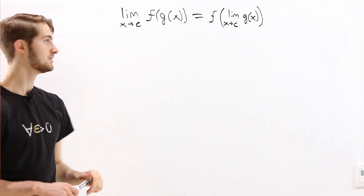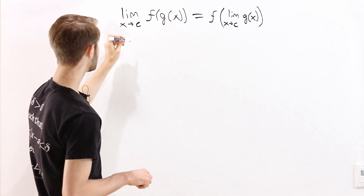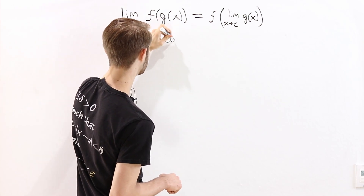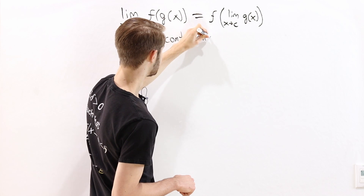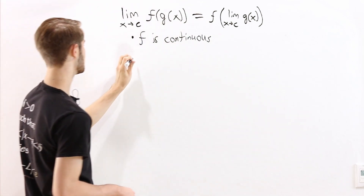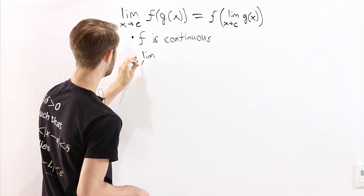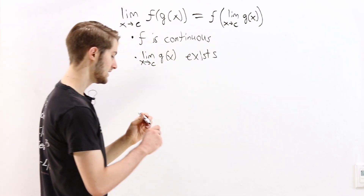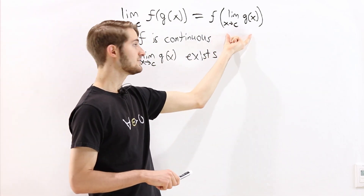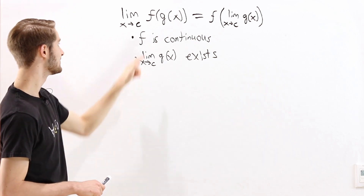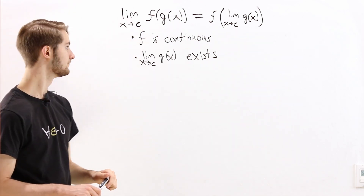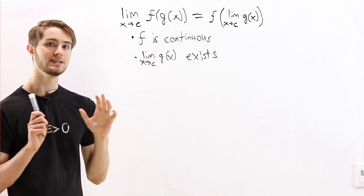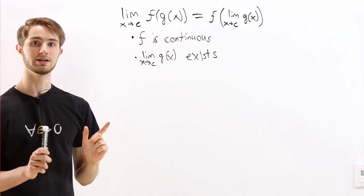There are two conditions that we need for this to work. The first condition is we need f to be continuous. And we need to know that the limit as x approaches c of g of x exists. So if this inside limit has a value and the function f is continuous, then we can switch the limit and the function. The proof of this statement is one of the examples of why the epsilon-delta definition of a limit is very important.